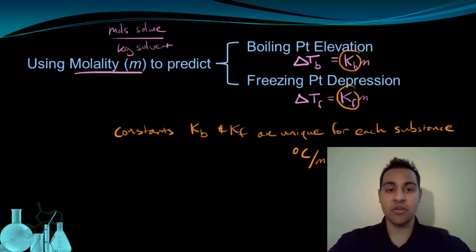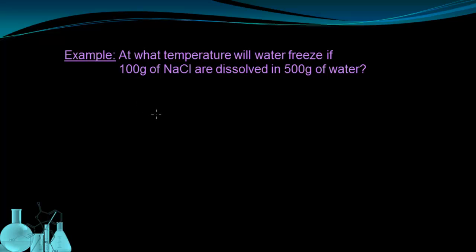So now how can we use these equations? Let's look at an example that we can walk through using these constants in these equations to see if we can figure out how much a dissolved solute will change the freezing point temperature or boiling point temperature. Here's our example. At what temperature will water freeze if 100 grams of sodium chloride are dissolved in 500 grams of water?